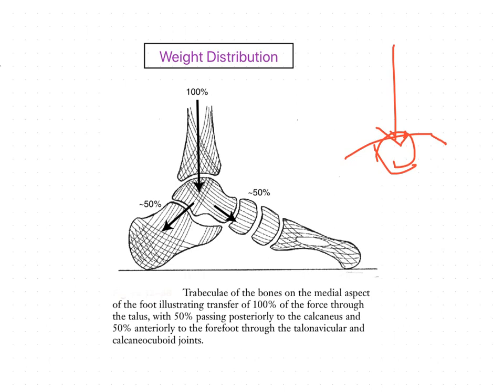In bilateral stance, each talus receives 50% of the body weight. In unilateral stance it receives 100% of the superimposed body weight. In standing, at least 50% of weight received by the talus passes through the large posterior subtalar articulation to the calcaneus.